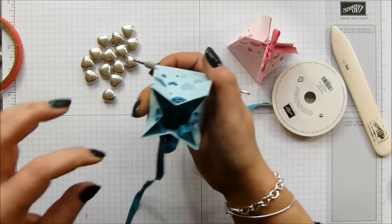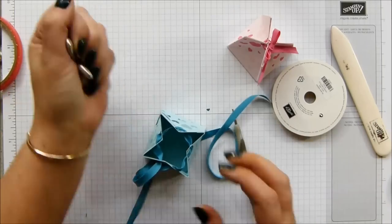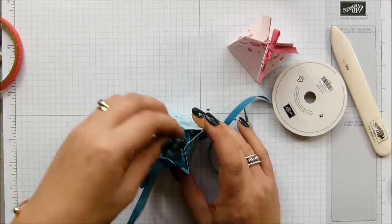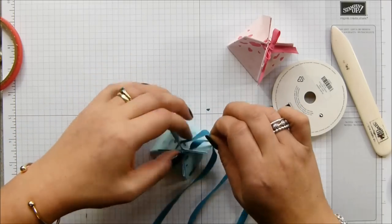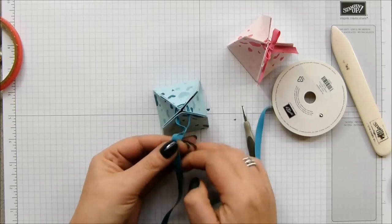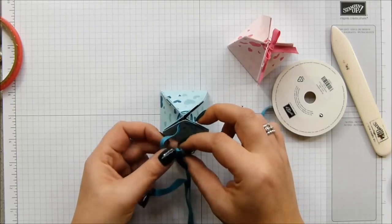Okay. So I put my ribbon all the way around. Now I can put my dragees in and then just pull it closed and tie a pretty bow.